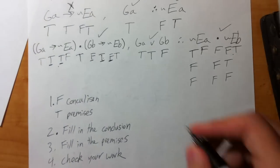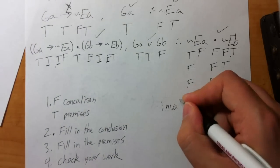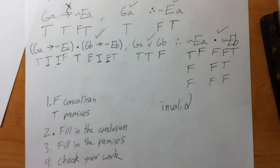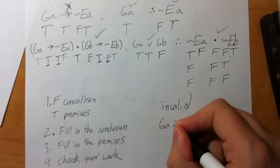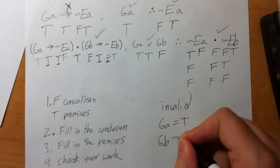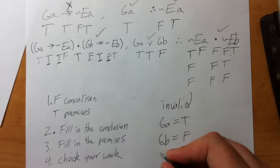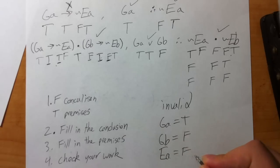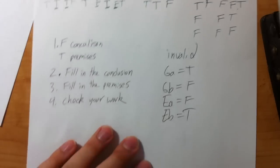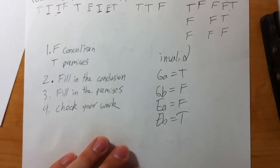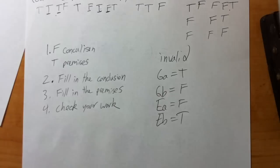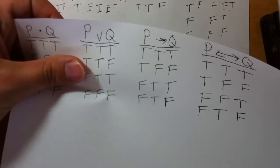So this argument is invalid. The invalidating sequence is: GA equals true, GB equals false, EA equals false, EB equals true. Make sure you do a bunch of practice in the web tutor. It's a little tricky but really not too bad. Study your truth charts and you'll be fine.